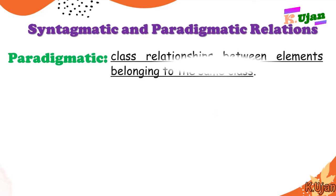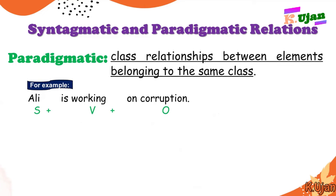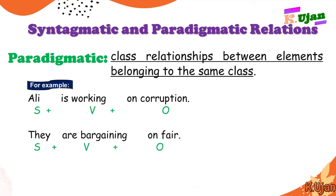Now, paradigmatic relations: class relationships between elements belonging to the same class. For example, we already have learned that a sentence is composed of subject, verb, and object. But in all sentences, like 'They are bargaining on fear,' we still put first the subject, then the verb, and then the object.